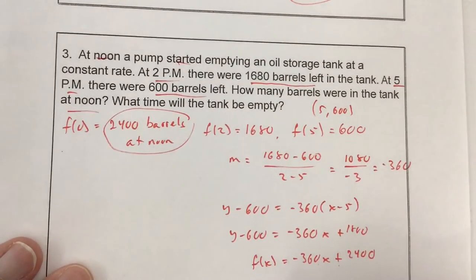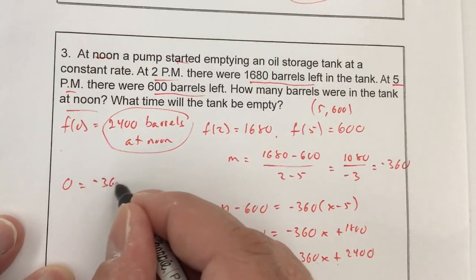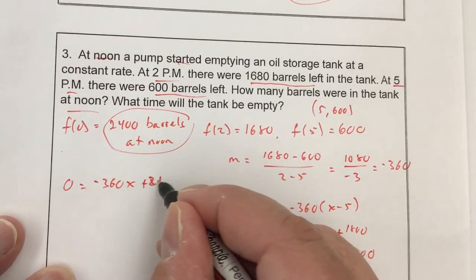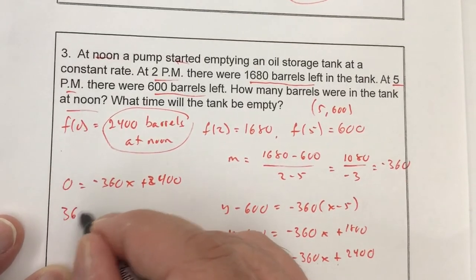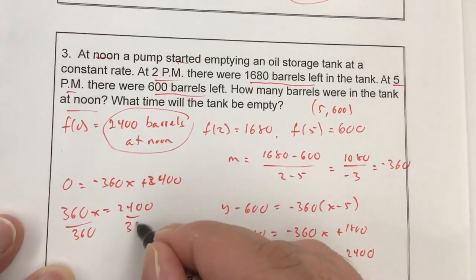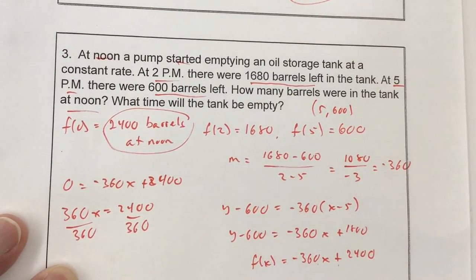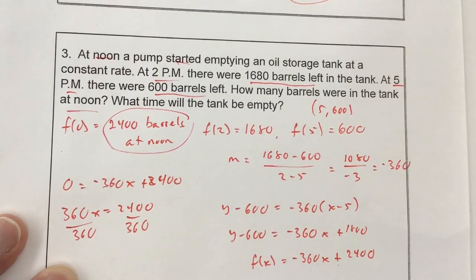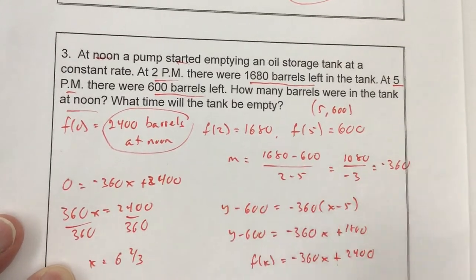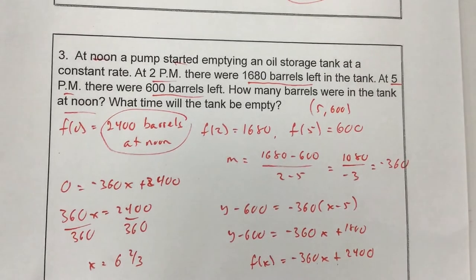Now, what time will be empty? Now I want f(x) to become 0. So I get 0 equals negative 360x plus 2,400. Add 360x. Divide by 360. Let's see, 2,400 divided by 360 equals 6 and 2/3, or 6.6 repeating. So what time would that be if it's 6 and 2/3?